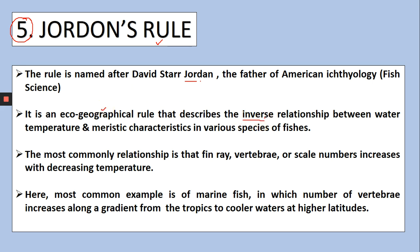This rule is relevant to aquatic ecology — it is an eco-geographical rule that describes an inverse relationship between water temperature and meristic characteristics in various species of fishes. Inverse means opposite. The meristic characteristics of fish species — such as the most common ones we see — fin rays, number of vertebrae, and the number of scales on their body — these features have an inverse relationship with the temperature of the water.